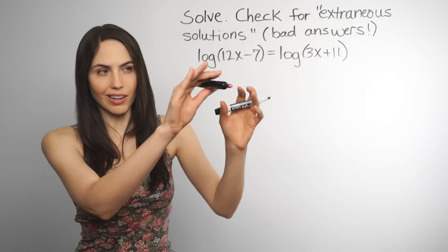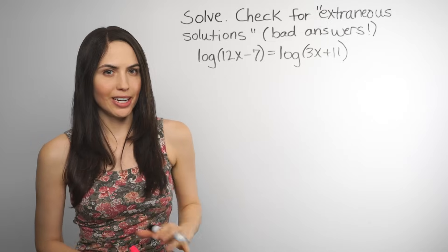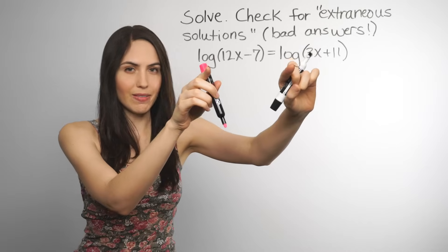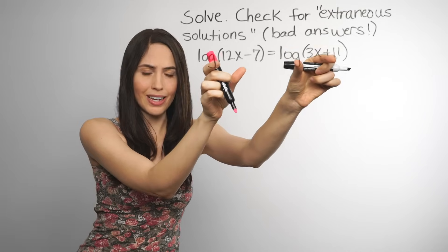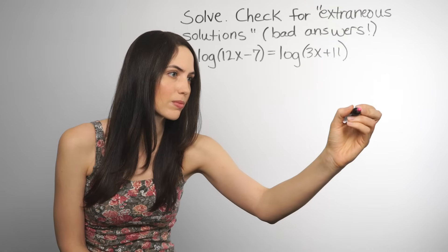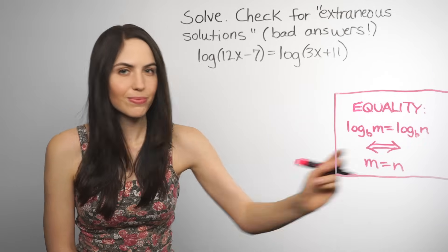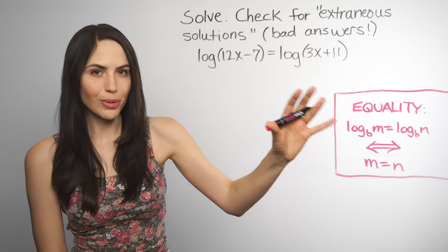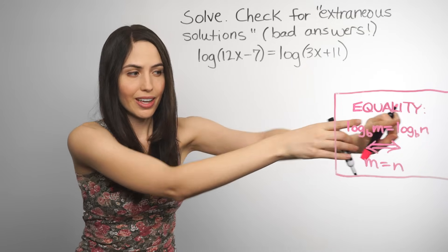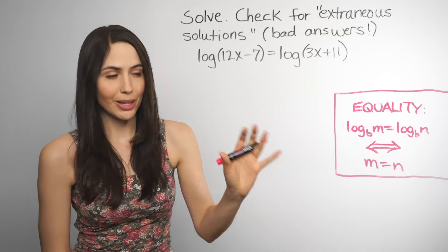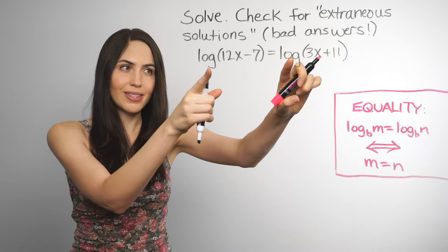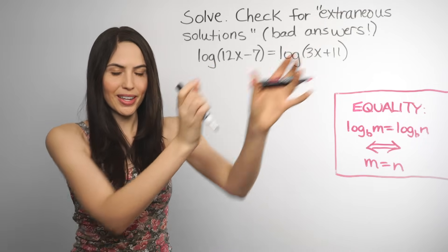Say you have a log on each side of the equation — it's getting more complicated, but don't worry, don't panic, because it's actually really simple. If the logs have the same base, you can just set the insides of the logs equal to each other and solve. This is the equality property. If the little bases are the same, you can take the insides of the log and set them equal to each other. This is for little bases that are positive and not equal to 1.